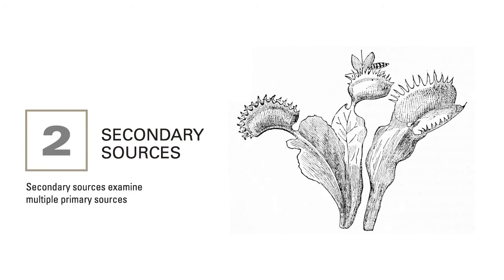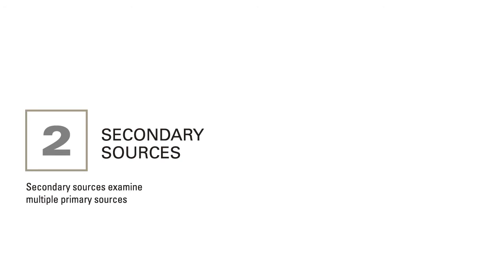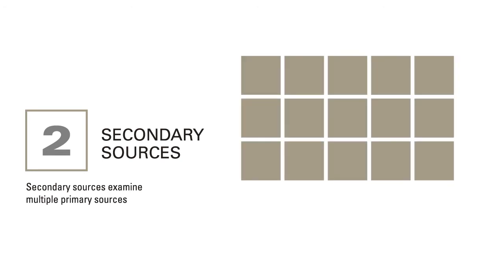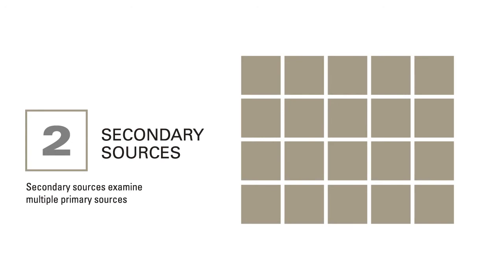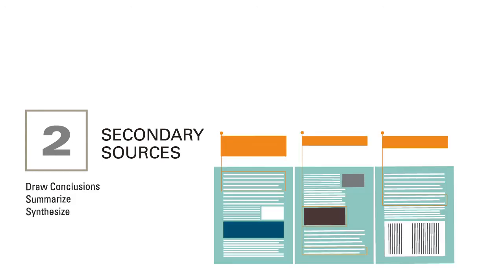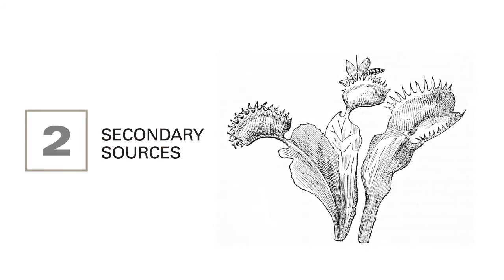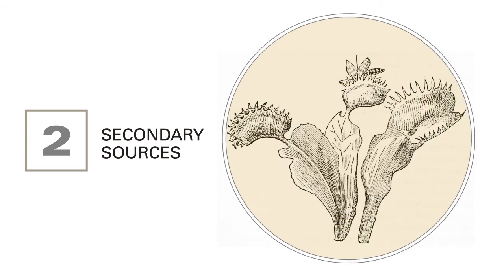A secondary source is often referred to as a review article. A review article will examine multiple primary sources. It may look at 10, 15, or even 20 different studies, all on similar topics. It will draw conclusions, summarize information, and synthesize that information. Secondary sources tend to be a little easier to read and a bit broader in scope.